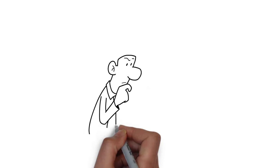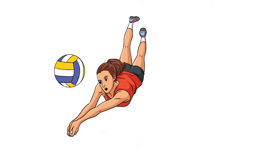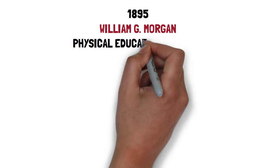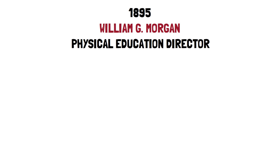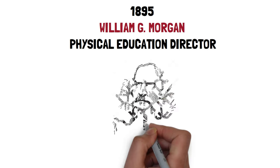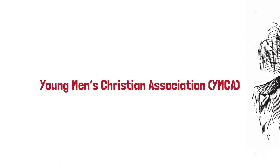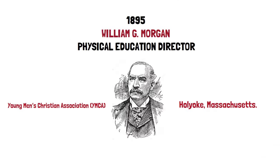You now understand the concept of volleyball. Now let us look at the history of volleyball to see how it came to be. Volleyball was invented in 1895 by William G. Morgan, physical director of the Young Men's Christian Association, YMCA, in Holyoke, Massachusetts.